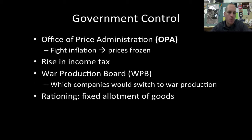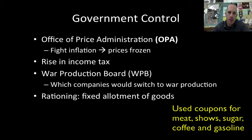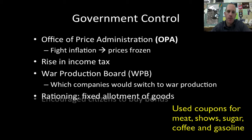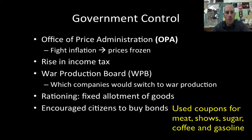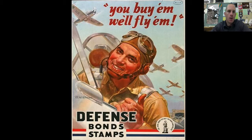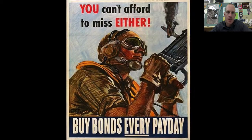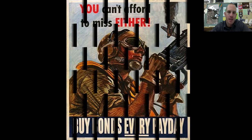We're also going to see rationing again — we saw this in World War I with Woodrow Wilson's meatless, sweetless, and wheatless days. In World War II, we'll see rationing of a fixed allotment of goods. War bonds also come to the forefront again. Posters encouraged the public: 'You buy them, we'll fly them,' 'Defense bond stamps,' 'Buy bonds every payday.'